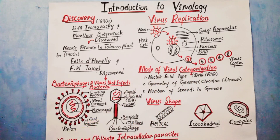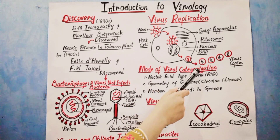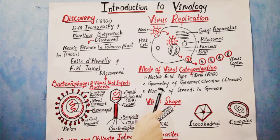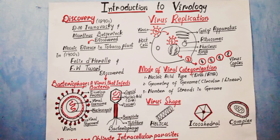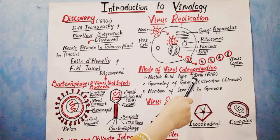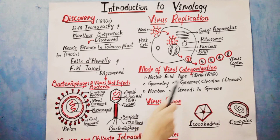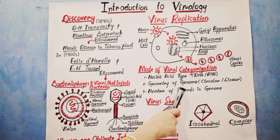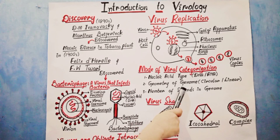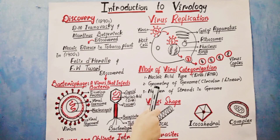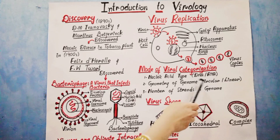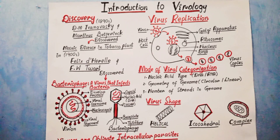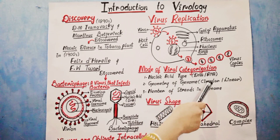Now we have the modes of viral categorization. Viruses can be categorized on the basis of nucleic acid — a virus may contain DNA or RNA. We can also categorize viruses on the basis of the geometry of the genome. The genome is a complete set of genetic instructions. The genome may be present in circular form or in linear form.